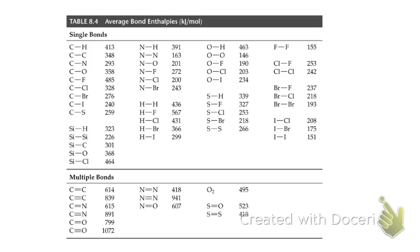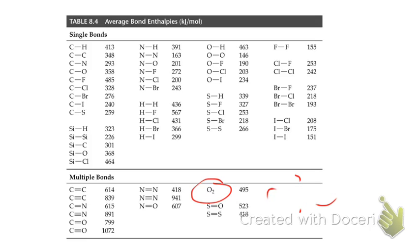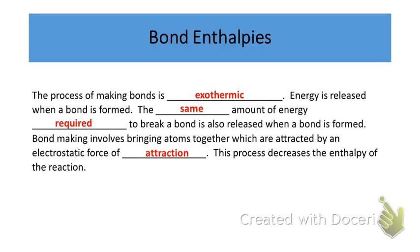Going back to our oxygen example: it would require 495 kilojoules of energy to break that double bond. Well, if we wanted to make that bond, it would release exactly the same amount — 495 kilojoules. Bond making involves bringing atoms together which are attracted by an electrostatic force of attraction, and this process will decrease the enthalpy of a reaction.